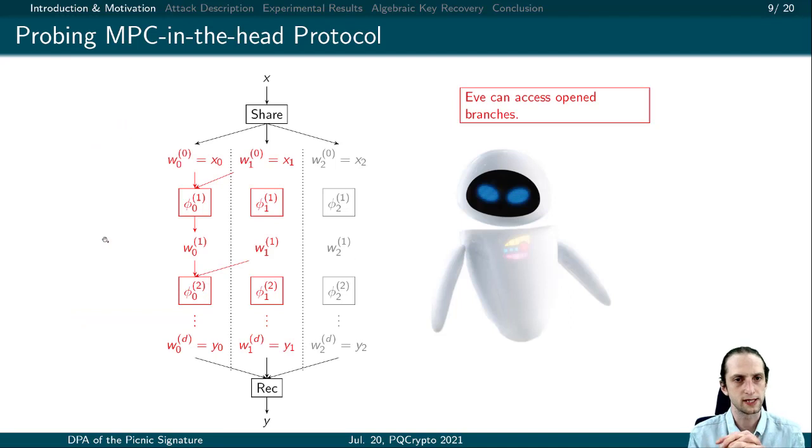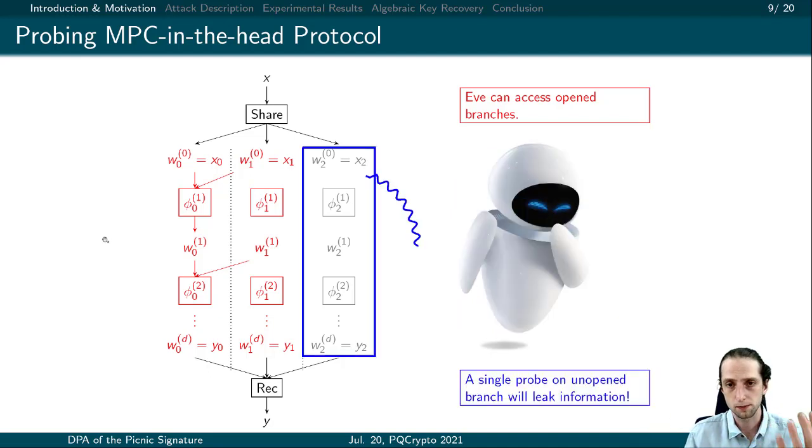Now let us go back to ZK-Boo again. The last time we opened two branches, as the protocol itself. You see how Eve can actually see the open values as three probes. Clearly, she can read the revealed values due to the protocol itself. Using this information, she can probe a variable in the unopened branch and this will leak information. Using this idea, we will describe our attacks.